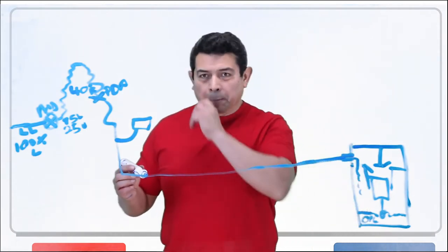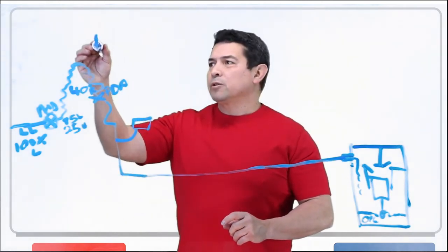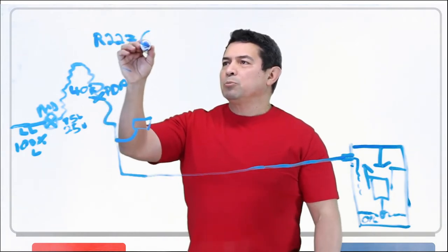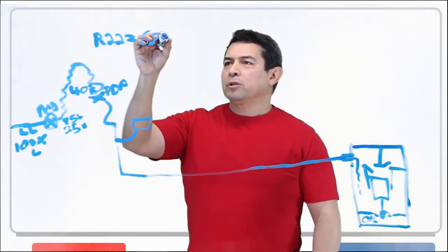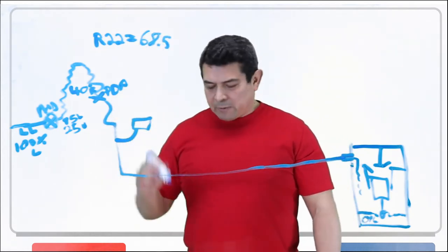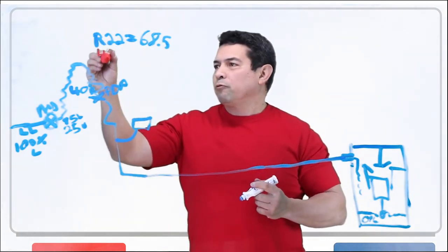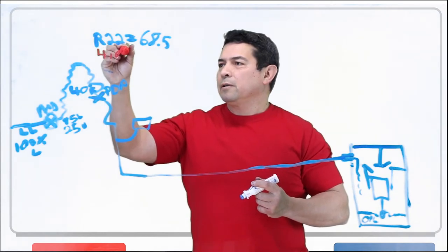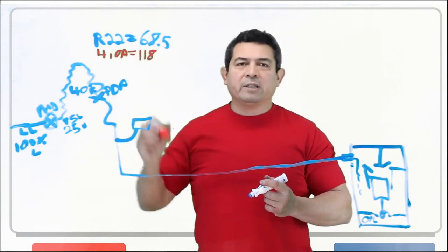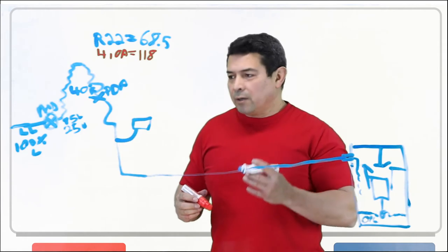But let's take a look at this right here. If this is 40 degrees, we know that if we're using, let's say, R22, then the pressure should be 68.5, 68 PSIG right there. If this happens to be, let's say, 410A, then this is going to be 118 PSIG. So the pressures are different, but the temperature is going to stay the same.